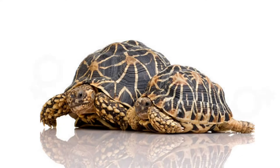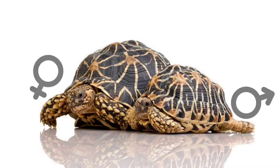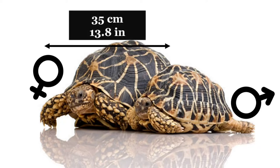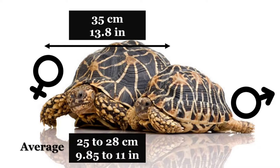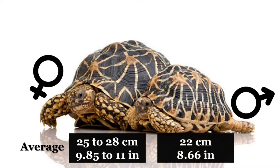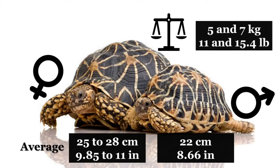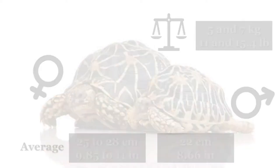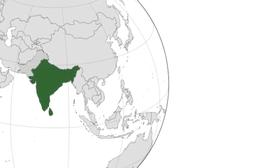These tortoises have five nails on each limb. The sexual dimorphism of adult Indian star tortoises is quite apparent. Females are considerably larger than their male counterparts. These can reach up to 35 cm, although the most common is that they do not exceed 25–28 cm. In contrast, males usually do not exceed 22 cm. The weight of these turtles usually ranges between 5 and 7 kg, between 11 and 15.4 lbs. Females' plastrons are much flatter than those of males, which have a concave shape. It should be noted that size will depend on its genetic line, as there are three varieties.